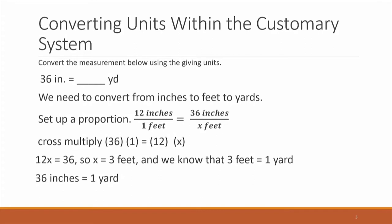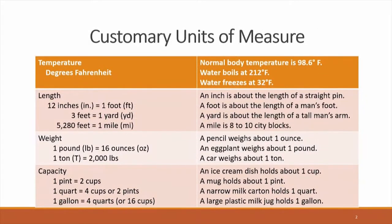Something else to keep in mind when you're setting up a proportion: if you have inches on top and feet on the bottom for the first fraction, you have to keep it the same in the other one. So we have 12 inches on top of one foot, and 36 inches on top of x because we're trying to find out how many feet. So inches on top for both and feet on the bottom for the other. You want to keep it the same.